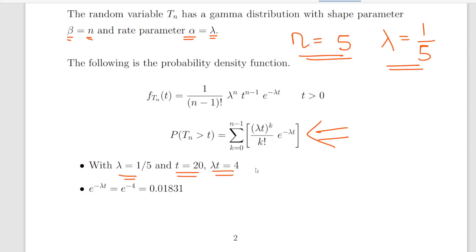Lambda is equal to 1/5, t is 20 years, so lambda t is equal to 4. We can actually just work that out: the exponential of -lambda t is e^(-4), which is 0.01831. So we're going to save that for later.